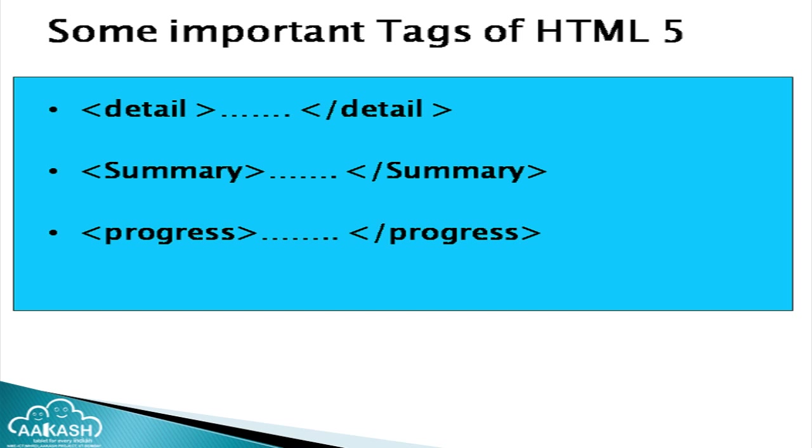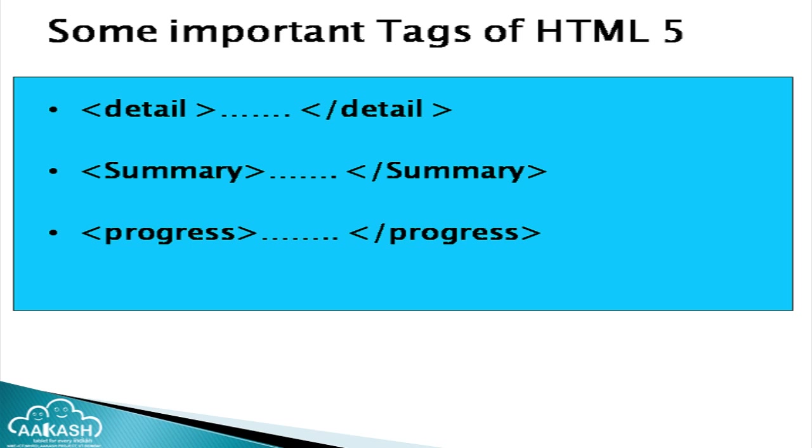The next tag is progress. The progress bar shows the completion progress of a task — for example, when you are downloading something, a progress bar with a green line fills up gradually and shows the completion of the download. We will see how to implement this in an HTML file. To use the progress bar, we need to write some JavaScript code or middleware language code, but the progress tag itself provides the bar.